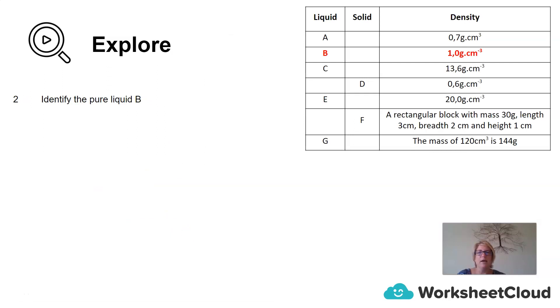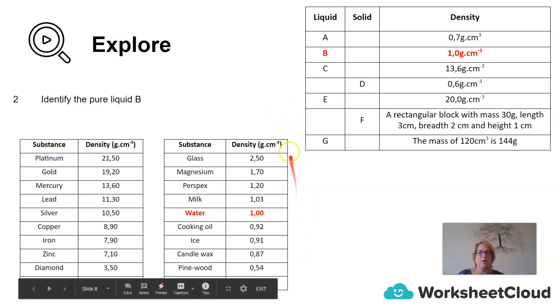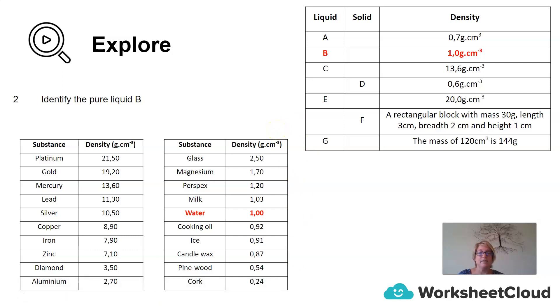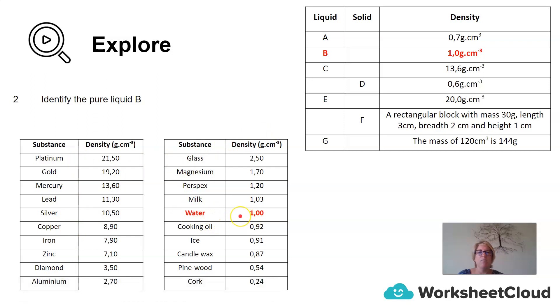If we have a look at B, it says identify the pure liquid B. They tell us that it's 1.0 gram per centimeter cubed. For that, you need to go and have a look at the density table. I've given you a density table over here. There are also density tables attached to the worksheets in our density lessons. If we have a look at the density table and we go through it, we see that water has a density of 1.00 grams per centimeter cubed. So we can identify B as possibly being water.